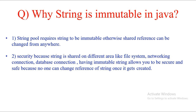The fourth question is: why is String immutable in Java? We know that once a String object is created, you cannot modify it. The first reason is the String pool — a place where all string literals are kept. The pool requires strings to be immutable; otherwise, shared references could be changed from anywhere. The second important reason is security: String is used in file systems, networking, database connections, passwords, and user IDs. Making it immutable secures these values so nobody can change the reference.